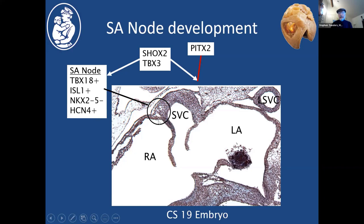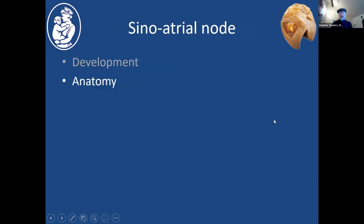The reason we don't normally see sinus nodes developing on the left atrial side, even though there's sinus venosus tissue there too, is that PIDX2 — the left-sided factor that imparts left-sided character to the left atrium — interferes with the activity of S-ox2 and TBX3 and so prevents a sinus node from normally developing on the other side.